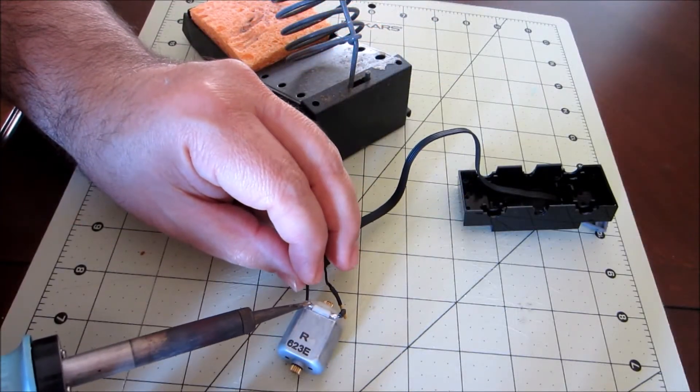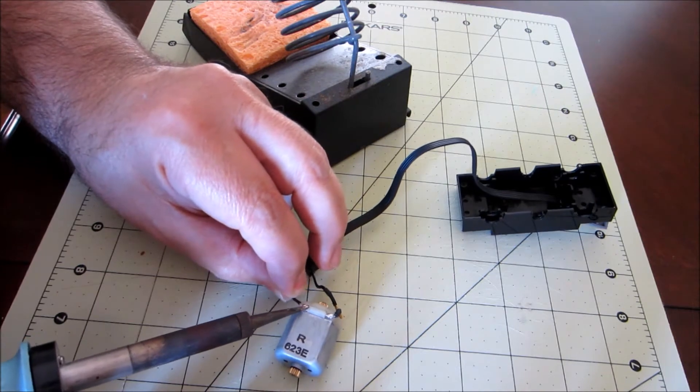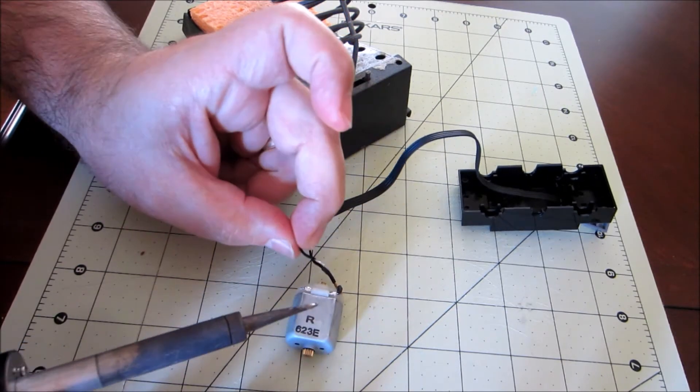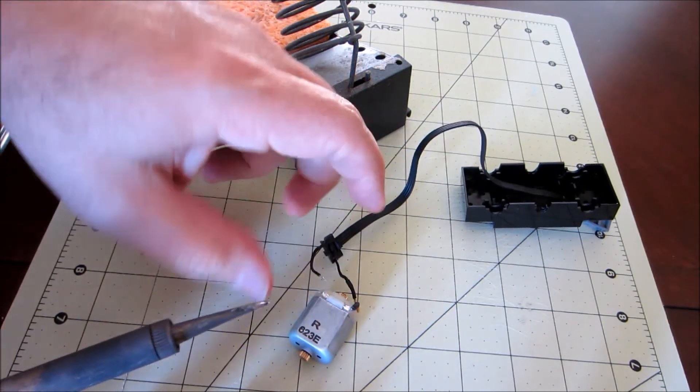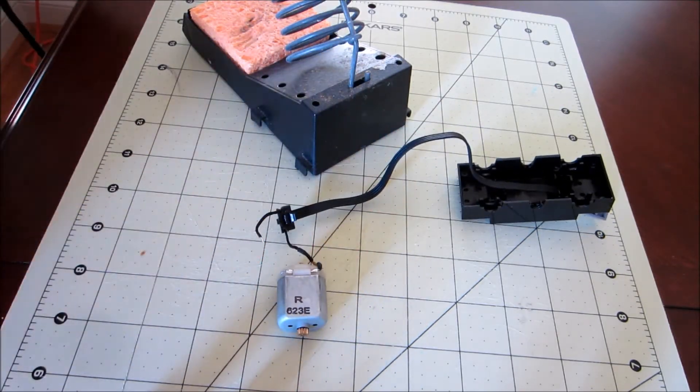Now that the soldering iron is warmed up, basically just touch it to the solder to get it melted and remove the wire from the connector. Very simple. And then you just do the same thing on the other side.